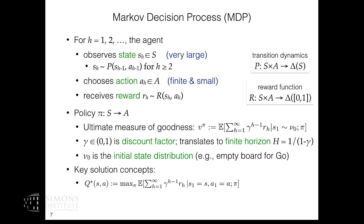Because we're doing value function approximation, it's important to introduce the key solution concept: the optimal Q value function Q*. It says that starting from state s and taking first action a, if after that you behave optimally — maximizing over all possible future actions — what's the expected cumulative value you can get? This is central to reinforcement learning for two reasons: first, if you obtain Q*, you immediately get the optimal policy by behaving greedily — at any state s, take the action that maximizes Q*(s,a).